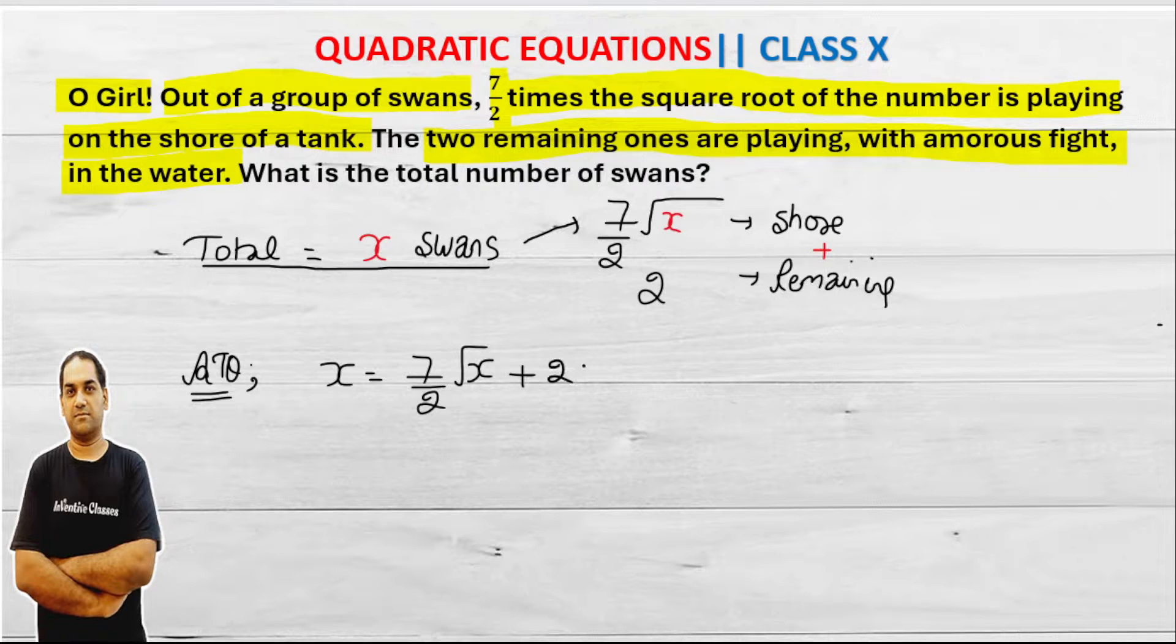Plus 2. Now this total number of swans is given to me - those playing and those sitting in corner. So I have to solve this now. And if I take LCM, this becomes 2x equals 7 root x plus 4.